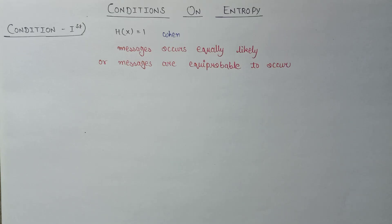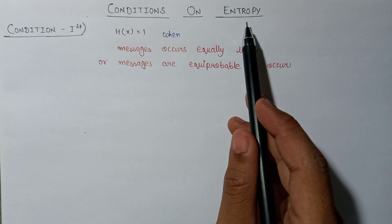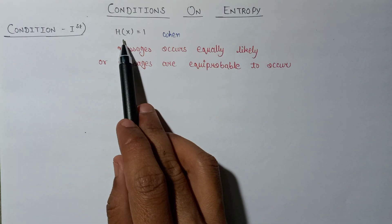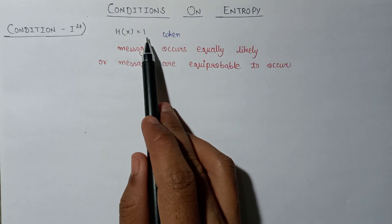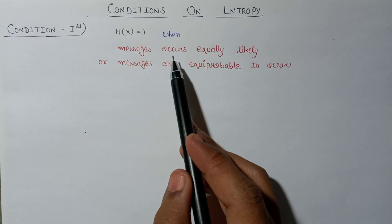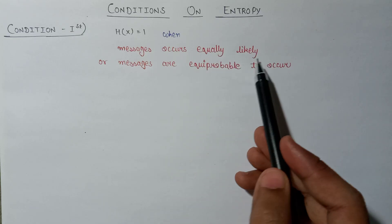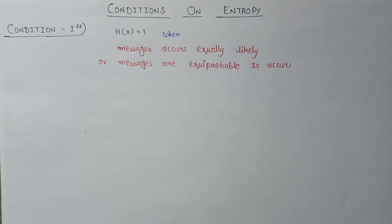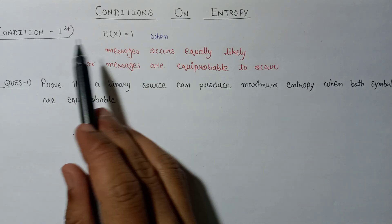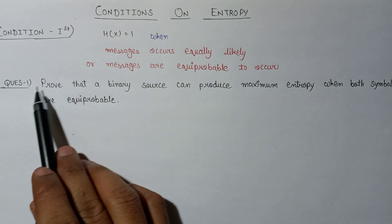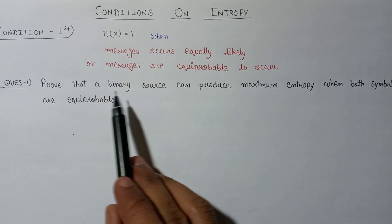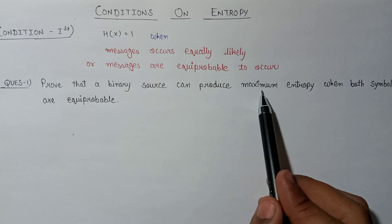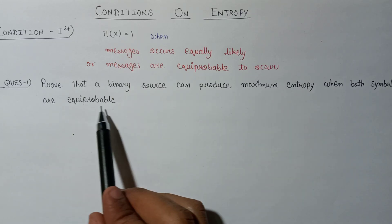Now let us discuss some conditions based on entropy. Condition number one: the entropy H(X) will be exactly equal to one when the messages emitted by the source are equally likely, or equally probable to occur. This condition may appear in an exam as: prove that a binary source can produce maximum entropy when both symbols are equi-probable.